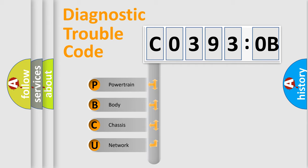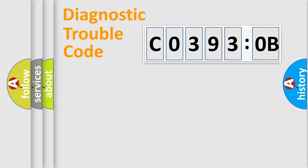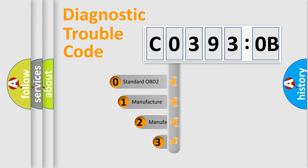We divide the electric system of automobile into four basic units: Powertrain, Body, Chassis, and Network. This distribution is defined in the first character code.